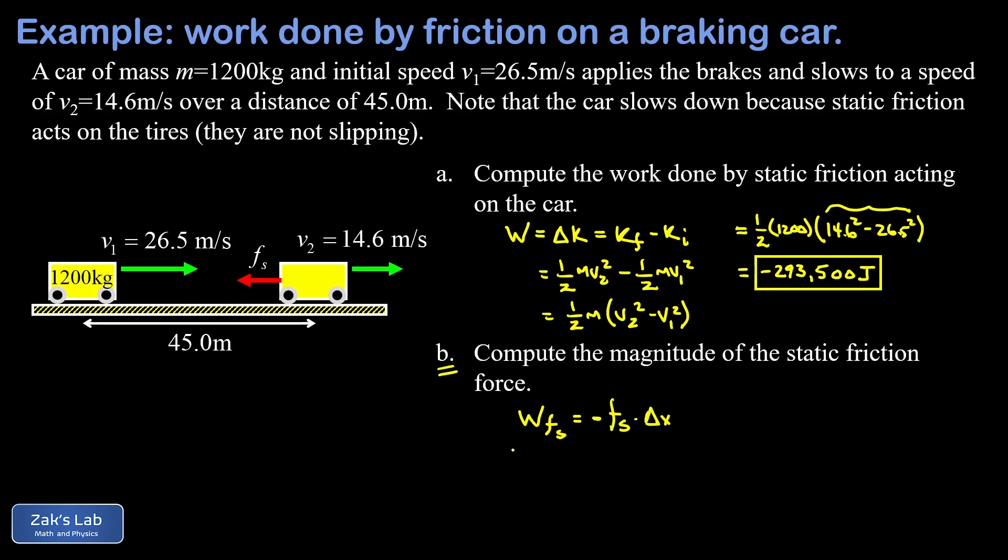The way I set that up, I'm treating fs as a positive number—that's just the size of the static friction force, and that's actually what we're looking for. We sub in the known value of the work done by friction: negative 293,500 joules equals negative fs times the size of my displacement, in other words the distance that this force acted through, and that was 45.0.